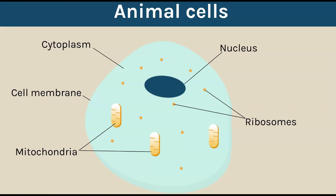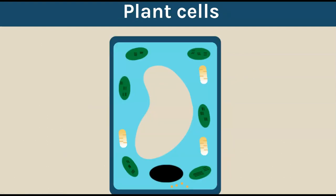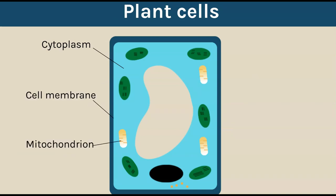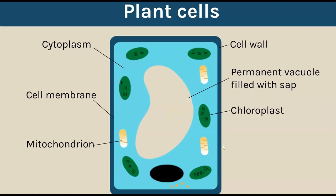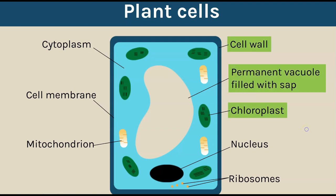Animal cells have a nucleus which contains the genetic information, and they have ribosomes. Now if we compare this to a plant cell, they do have lots of structures in common - cytoplasm, cell membrane, and mitochondria. Notice here I've called it mitochondrion - that's because it's only pointing to one. The singular is mitochondrion, the plural is mitochondria. They also have a cell wall, a permanent vacuole filled with sap, chloroplasts, a nucleus, and ribosomes.